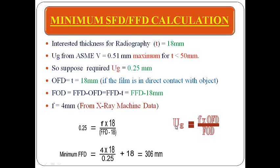We put all this data into the UG equation: UG = 0.25 mm.